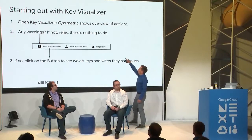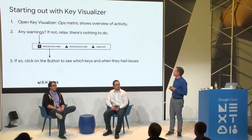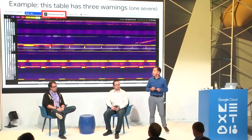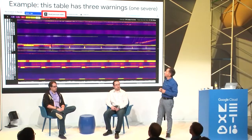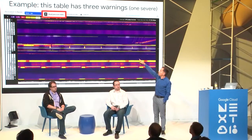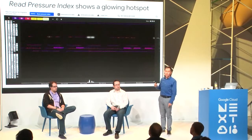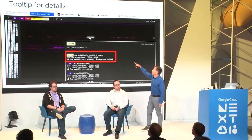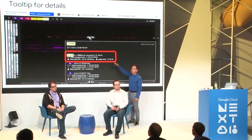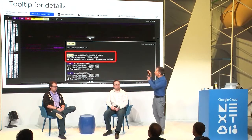If there are warnings, they show up at the top, and you click the button to see which keys and when they were causing problems. For example: you open Key Visualizer in the ops view, you see one week of behavior — what's hot, what's cold, diurnal patterns. You spot a read pressure warning with three exclamation marks, meaning it's severe. You click that button and it brings you immediately to the read pressure index metric, showing a glowing white stripe.